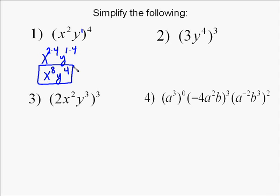So x to the 2nd to the 4th, you multiply the exponents, so it's to the 8th. And then you've got to remember that y is like y to the 1st, and so you multiply 1 times 4 to get 4.